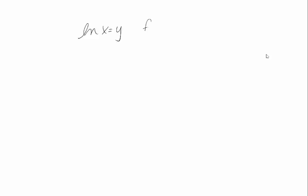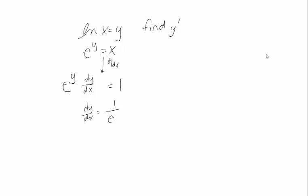We can differentiate the logarithm using implicit differentiation. If log of x equals y, I want to find y prime. Remember, this is the same as saying e to the y is equal to x. So I can differentiate both sides implicitly. The right-hand side is just going to be 1. For the left-hand side, we have to use the chain rule. The derivative of e to the x is e to the x, but I don't have x, I have y, so I have to multiply by the derivative of y. And this tells me that dy/dx is 1 over e to the y. But e to the y is the same as x.